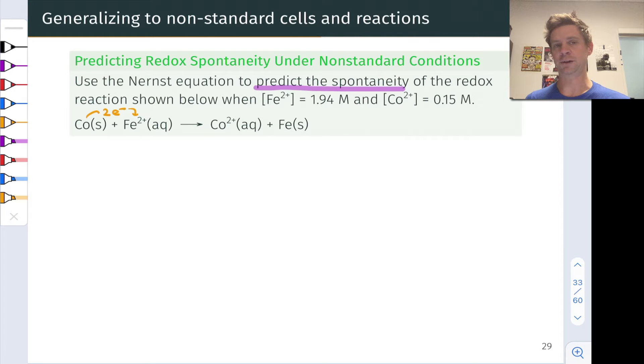The big question here is to think about a hypothetical galvanic cell under these circumstances with Fe2+ concentration equal to 1.94 molar and Co2+ concentration in the other half cell equal to 0.15 molar with those metals, cobalt and iron, in their respective half cells, and ask whether the cell potential under these conditions would be positive or negative. If the cell potential is positive, then we're looking at a spontaneous redox reaction. We could design a galvanic cell around these conditions, and it would discharge according to this redox reaction as written.